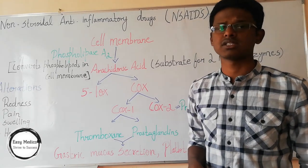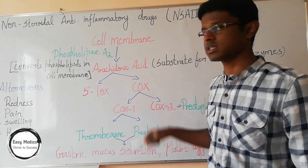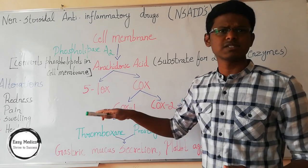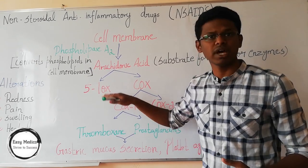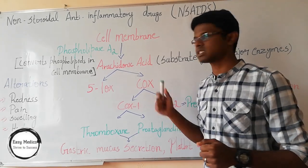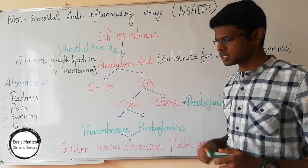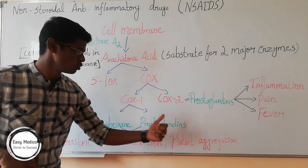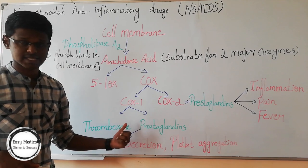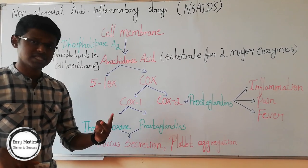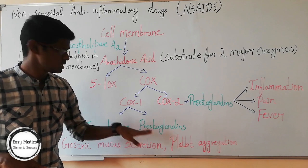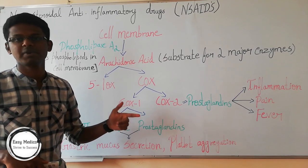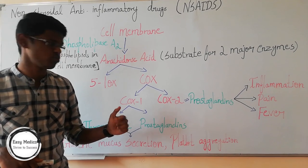What is LOX? LOX is lipoxygenase, and COX is cyclooxygenase. We won't discuss much about the lipoxygenase enzymes here. Let's discuss about cyclooxygenase. Cyclooxygenase is further classified into two types: cyclooxygenase I and cyclooxygenase II. Cyclooxygenase I further produces two products: thromboxane and prostaglandins.